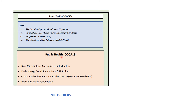Coming to the public health syllabus, we have basic microbiology, biochemistry, biotechnology, epidemiology, social sciences, food and nutrition, communicable and non-communicable diseases. They have clearly written prevention and prediction, public health, and epidemiology. So this is your syllabus.